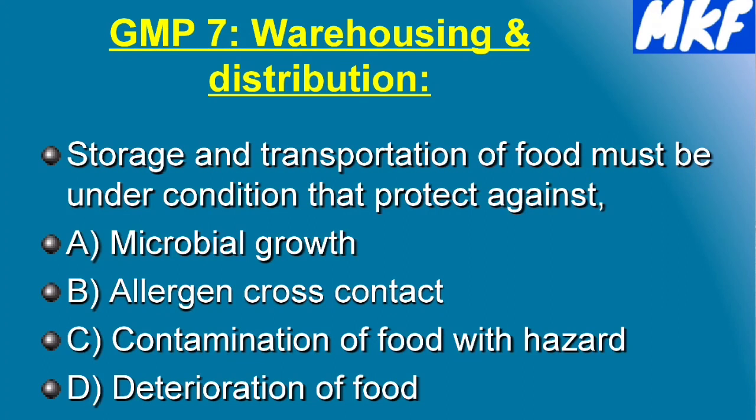GMP Component 7 is Warehousing and Distribution. Storage and transportation of food products must prevent contamination, cross-contamination, and deterioration. Adequate space is required for packaging materials, raw materials, and finished products. In-transit or en-route temperature monitoring may be required. Products must be protected from wind-blown dust and must not suffer allergen cross-contact or cross-contamination during storage.